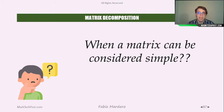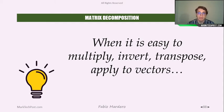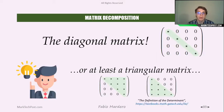What do we mean by a matrix that can be considered simple? A matrix can be said to be simple when it is easy to multiply, invert, transpose, apply to vectors, and perform all other operations we have previously defined. The simplest matrix that comes to mind is the diagonal matrix — it is very easy to use and to compute.